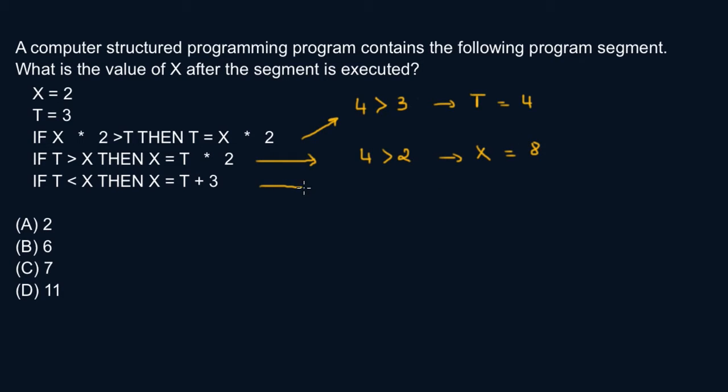In this statement, if T less than X: we have T is now 4, X is now 8. So 4 less than 8, this statement is true. Then X becomes T plus 3, which is 4 plus 3. 4 plus 3, that's 7.